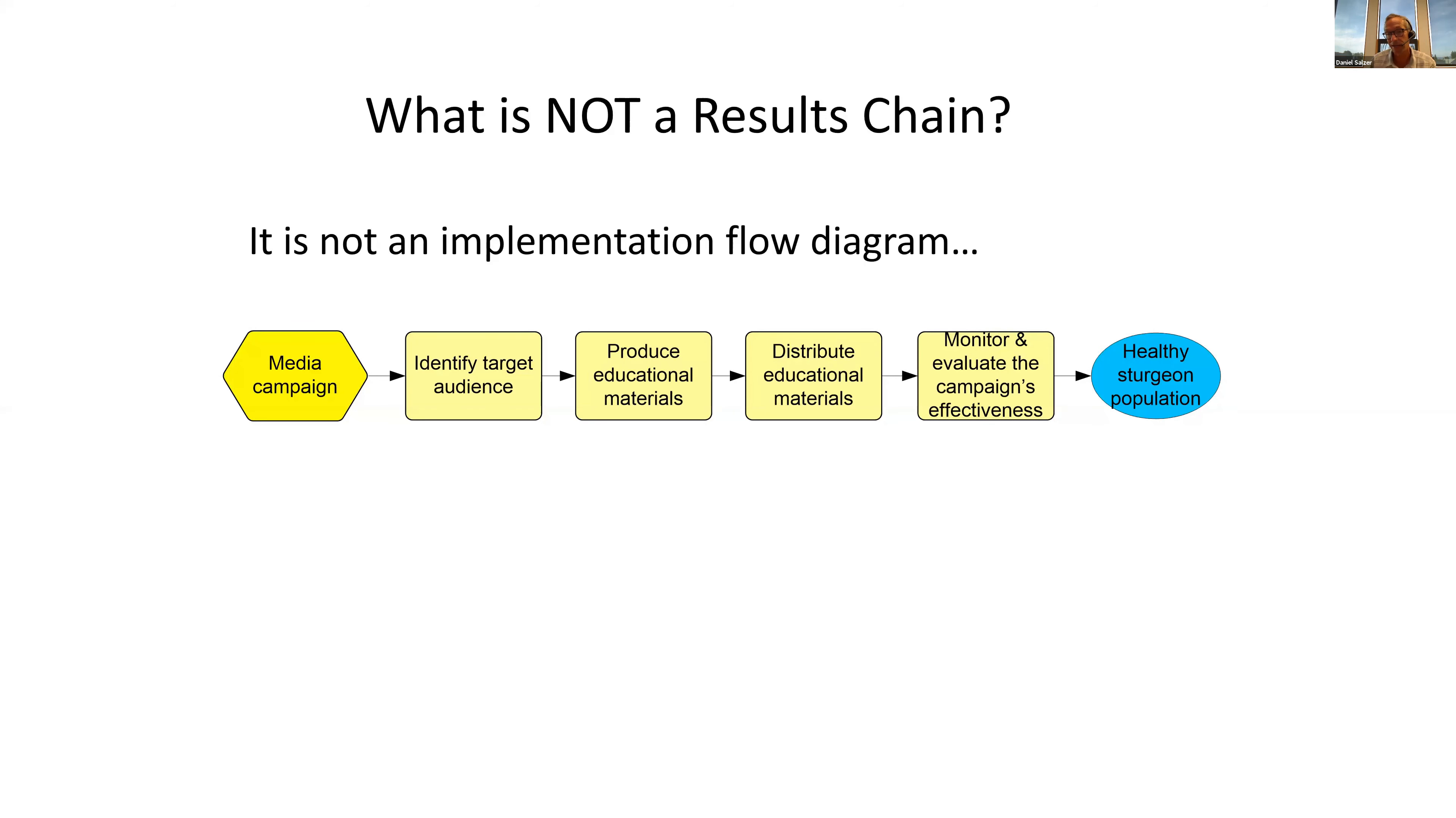It's often a good idea to read your factors from left to right as a series of if-then relationships. Make sure you have your results chain set up in the right way and not as an implementation chain. This is a pretty common mistake.